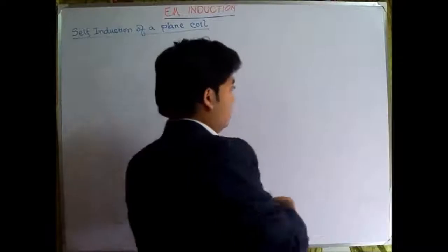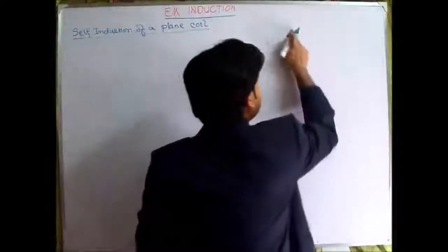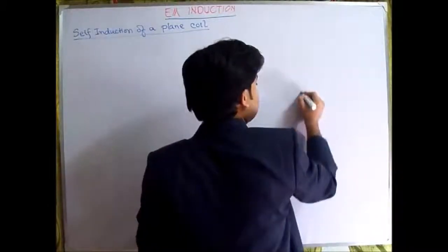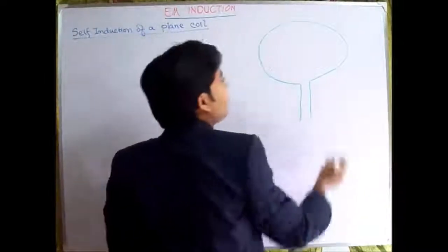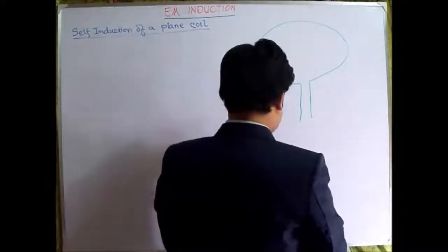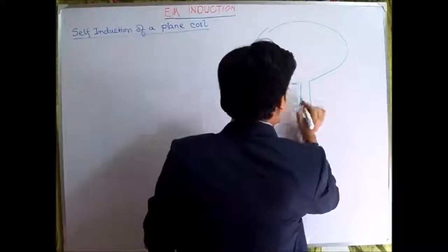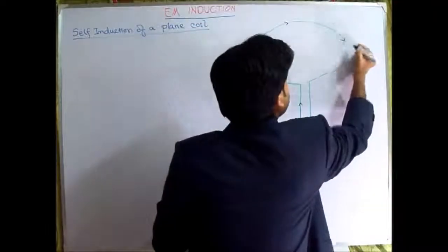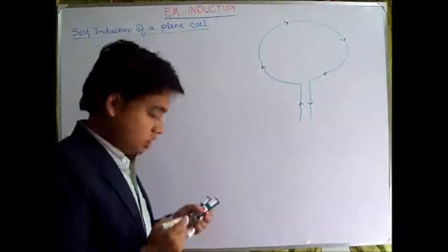So if we need to understand this coil diagram, we can take it like this. Say for example this is the coil. Over here the current is flowing like this.